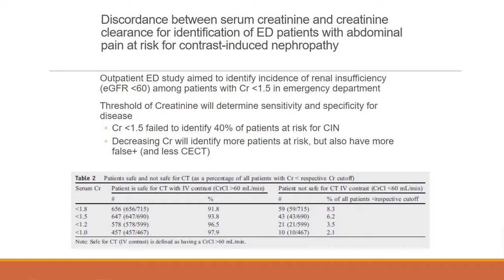A study was done in outpatient ED patients presenting with abdominal pain, aimed at identifying the incidence of CKD — defined as an eGFR of less than 60 — among patients with a creatinine of less than 1.5. They showed that the creatinine threshold of 1.5 failed to identify 40% of patients with an eGFR of less than 60. Decreasing the creatinine threshold identifies more at-risk patients but produces more false positives. Conversely, increasing the threshold misses more patients with CKD.